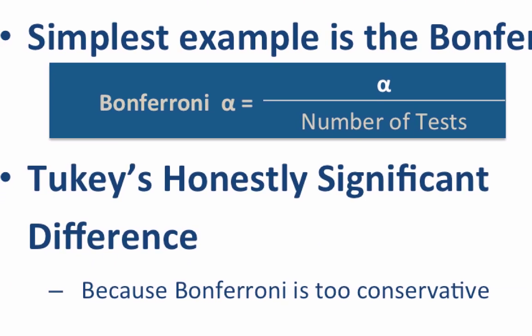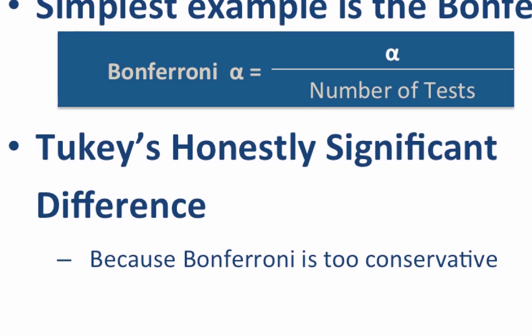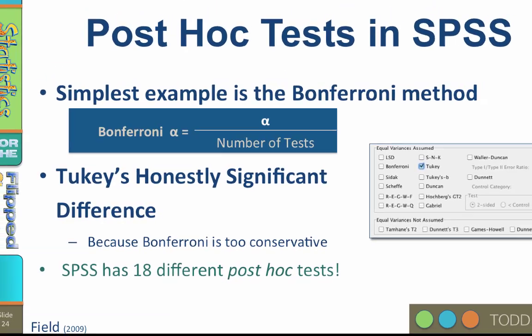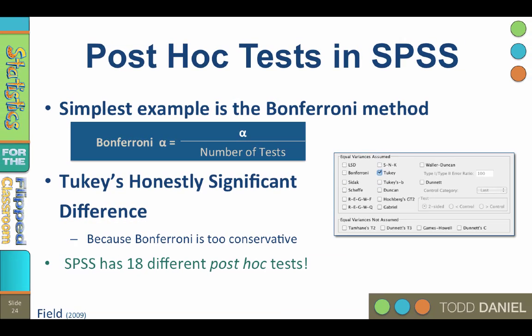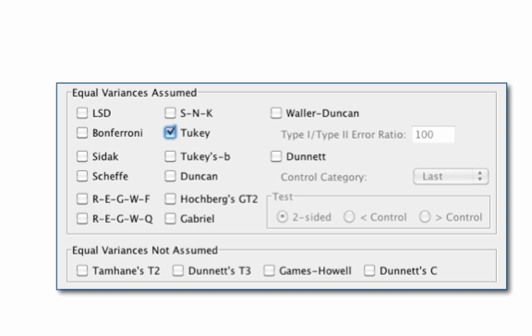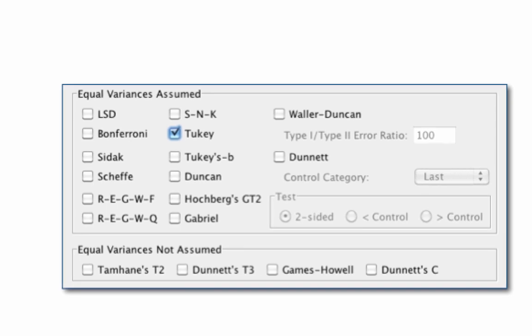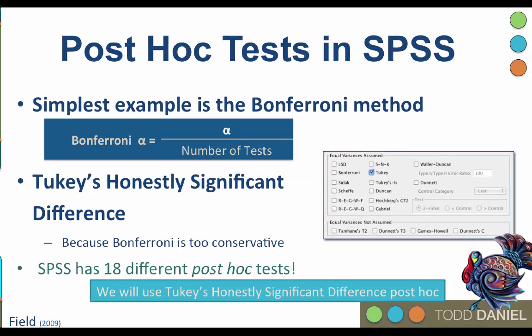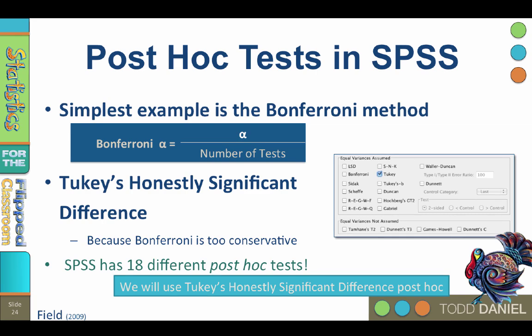Another alternative is Tukey's Honestly Significant Difference post hoc test. Tukey's HSD tells us how far apart the means must be in order to be truly significant. This is the post hoc test we will use in this example. It's a very good test, but it requires that the sample sizes be equal. If your sample sizes are not equal, you still have plenty of options — SPSS has 18 different types of post hoc tests, each used when certain criteria exist or when certain assumptions are unmet. And remember, it's pronounced Tukey, not Turkey.